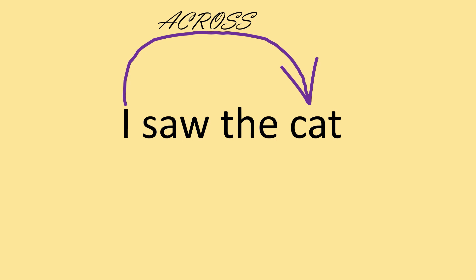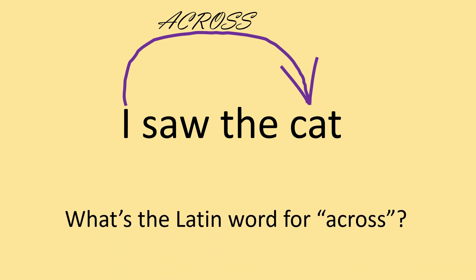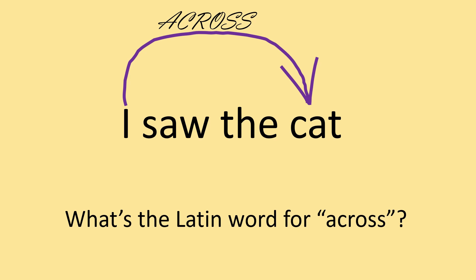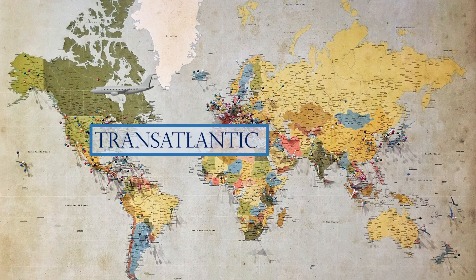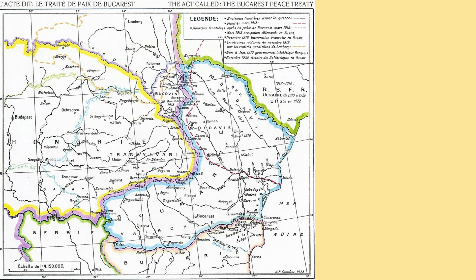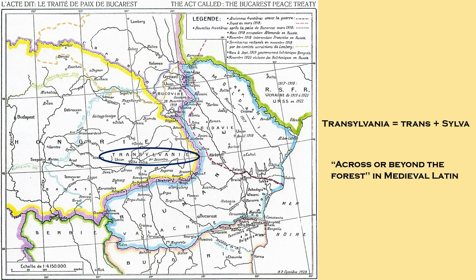Let's think about it — what is the Latin word for 'across'? We use it every day, so don't worry, it's not complicated at all. If you look at a map of the world and you're going across the world from Europe to the Americas, what kind of flight is it? It's a transatlantic flight. So the word here is 'trans' — across the Atlantic.